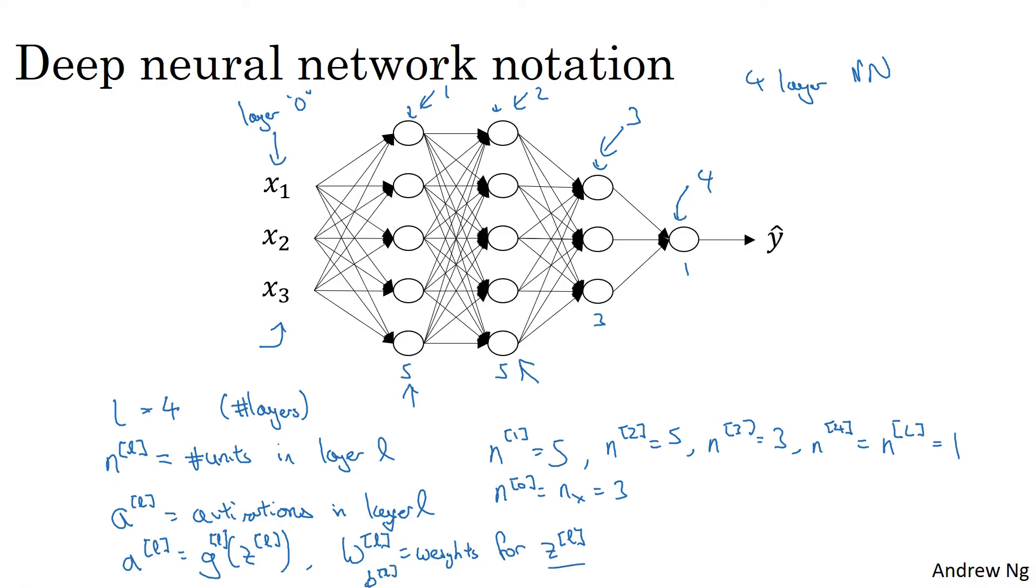Finally, just to wrap up on the notation, the input features are called X, but X is also the activations of layer zero. So A^0 is equal to X, and the activation of the final layer, A^L, is equal to ŷ. So A superscript square bracket capital L is equal to the predicted output, the prediction ŷ, of the neural network.